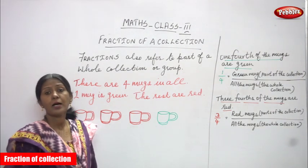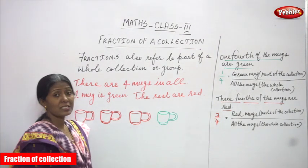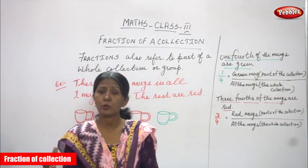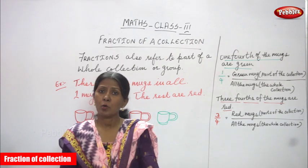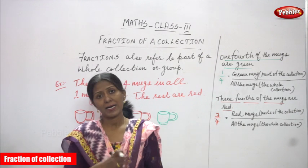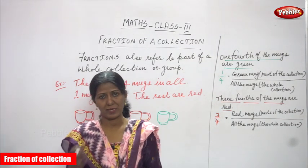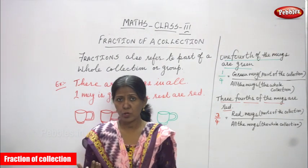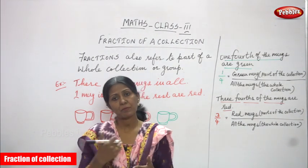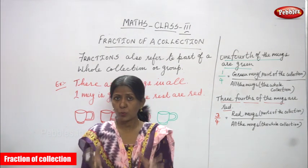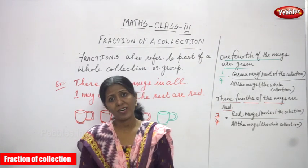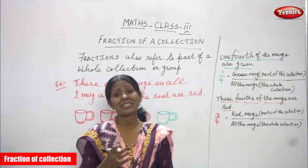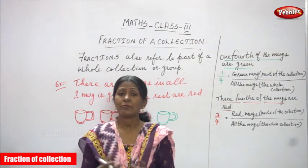Part of a whole thing is called as a fraction. A group of a part is also a fraction. For example, if we have five groups and select only one group, with three students in each group, five groups means five into three — fifteen children total. If I select only two groups, that means two by five group-wise, or six by fifteen individually. So six children out of fifteen is the exact fraction.